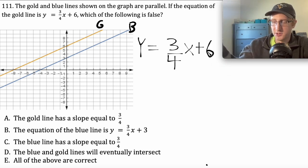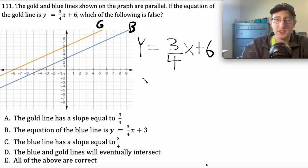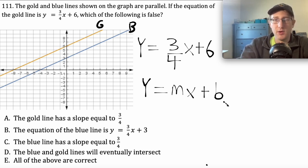To get this question right, the first thing I want you to understand is the standard form of a linear equation. It looks like this: y equals mx plus b. The m stands for slope and the b is the y-intercept. If I look at the equation of the gold line, y equals 3 over 4x plus 6, just by looking at this I can tell that 3 over 4 is the slope and the y-intercept is 6. Another way to tell that the y-intercept is 6 is by looking at the gold line here. I can see that it crosses the y-axis at 6.